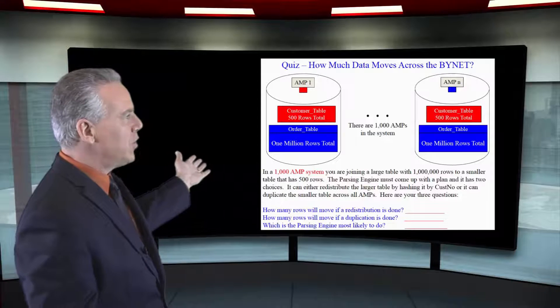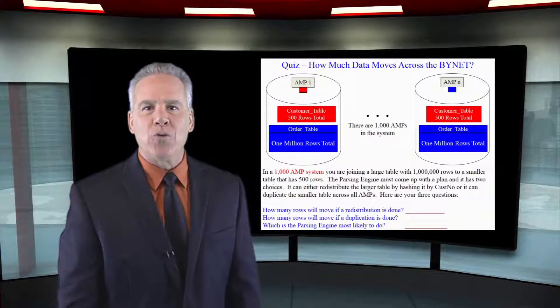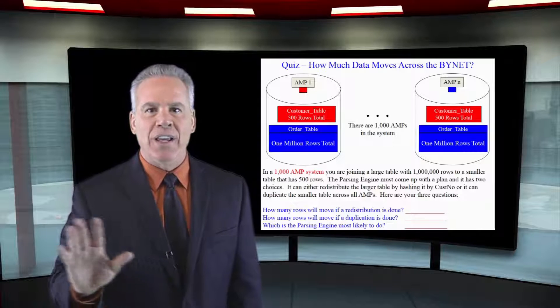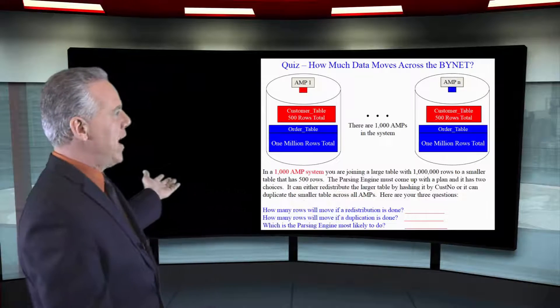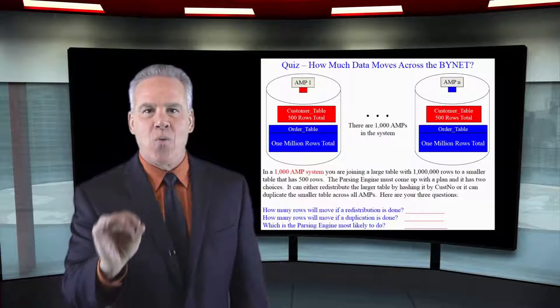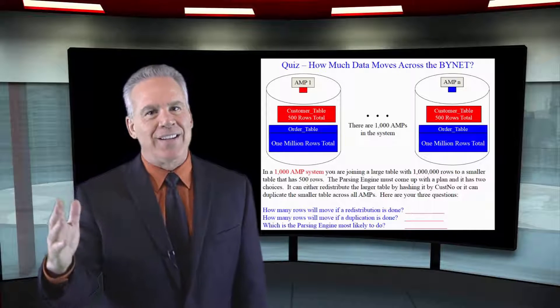Our customer table has 500 rows in it in its entirety. Our order table has exactly 1 million rows in its entirety.